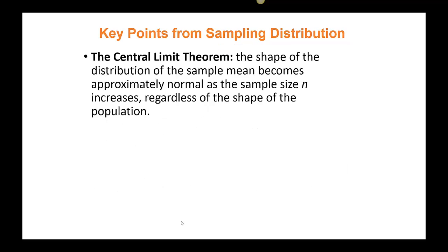The central limit theorem tells us the shape of the distribution of the sample mean: it becomes approximately normal as the sample size n increases, regardless of the shape of the original population. This is important because now we are able to solve problems that find the percentage, probability, or proportion of groups of size n, focusing on the sample mean.